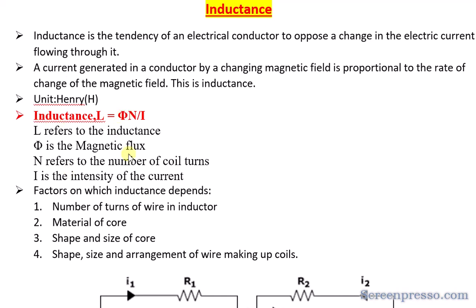Using that formula, we can identify the factors on which inductance depends. These are: the number of turns of wire (N), the material of the core, the shape and size of the core, and the shape, size, and arrangement of the wire making up the coils.